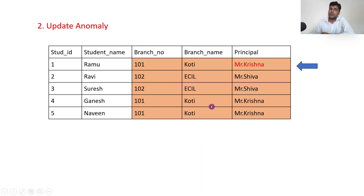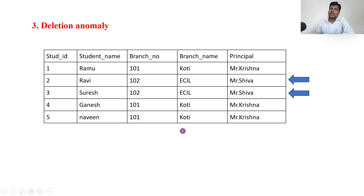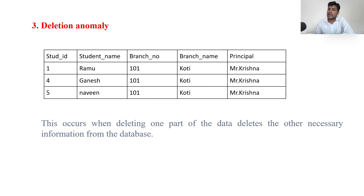For updation anomaly: if the principal of Koti changes from Krishna to Mahender, we must update every record where Mr. Krishna is mentioned. If we miss even one record, it leads to data inconsistency. For deletion anomaly: if we delete student records — say Ravi and Suresh — the branch details are also lost. This occurs when deleting one part of data deletes other necessary information from the database.